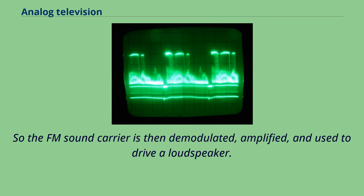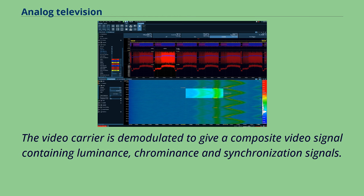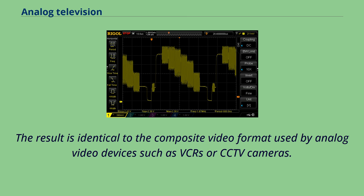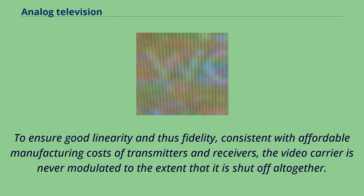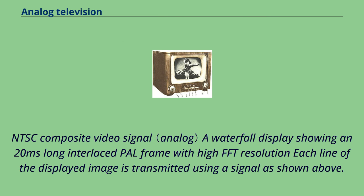The video carrier is demodulated to give a composite video signal containing luminance, chrominance, and synchronization signals. The result is identical to the composite video format used by analog video devices such as VCRs or CCTV cameras. To ensure good linearity and thus fidelity, consistent with affordable manufacturing costs of transmitters and receivers, the video carrier is never modulated to the extent that it is shut off altogether.